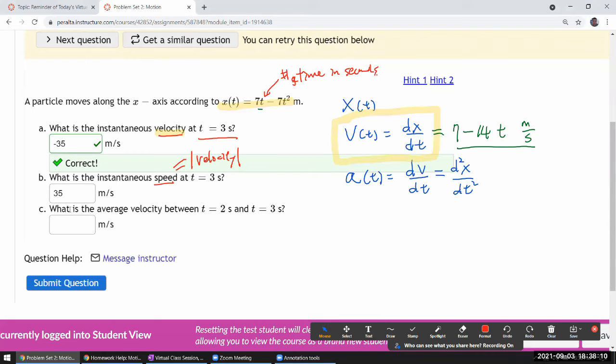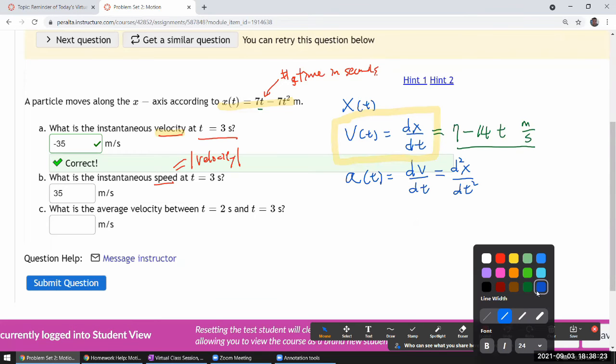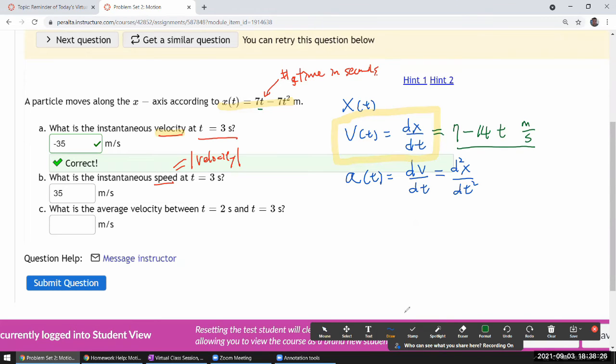It asks, what is the average velocity between t equals 2 seconds and t equals 3 seconds? Here I think the easiest thing to do is, the textbook will actually give you a definition of average velocity. So textbook will give you a definition. The definition is equal to a change of position over a duration of time. This is the language that we use in non-calculus-based physics class.